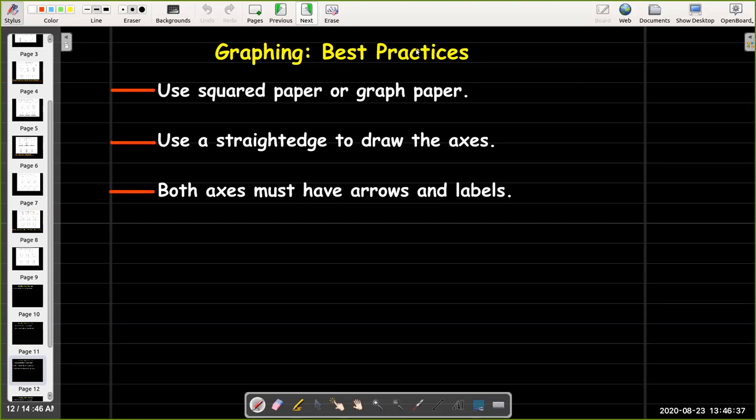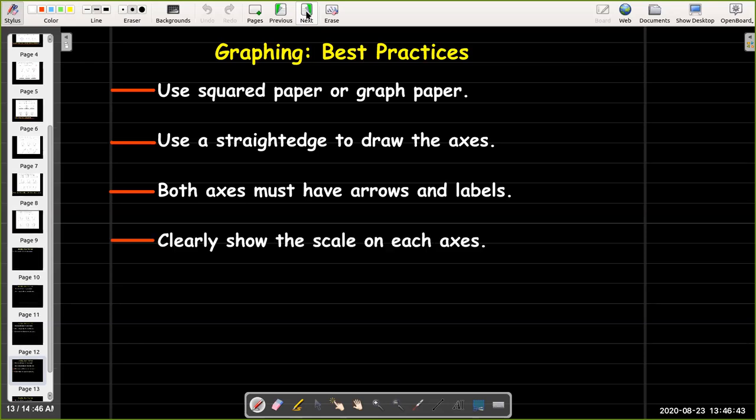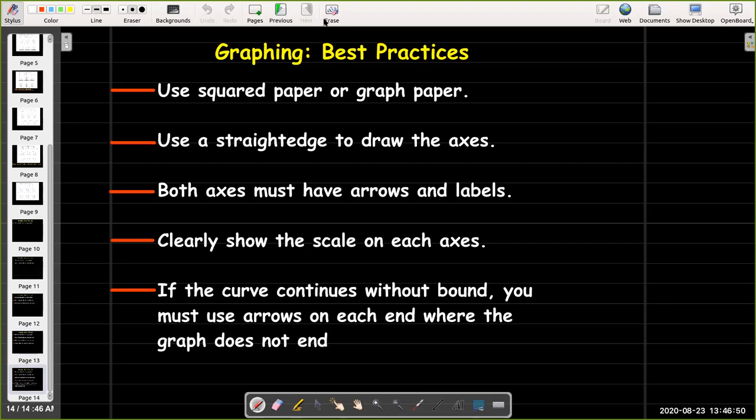We want to make sure that we've labeled the axes. The axes are not bounded. So if they're not bounded, let's put arrows on them. We need to show the scale on each axis. And if the curve continues without bound, let's use arrows on the curve as well. So I hope you've enjoyed this short video on Best Practices for Drawing Graphs.